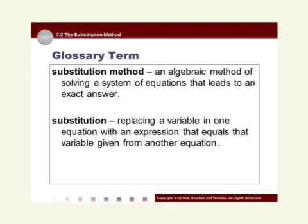Here in Chapter 7, we're going to be focusing on three different methods to solve a system of equations. The first method was the graphing method, which we studied yesterday. Today's focus is the second method, the substitution method. Let's go ahead and take a look at our two glossary terms for today's lesson. The first glossary term is the substitution method: an algebraic method of solving a system of equations that leads to an exact answer.